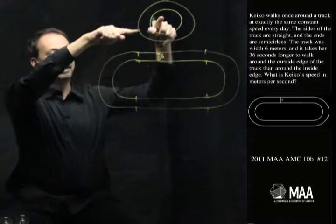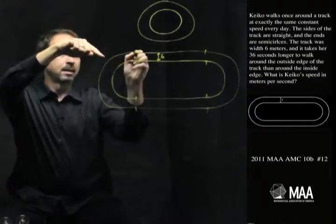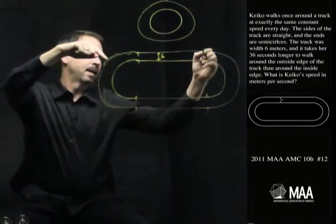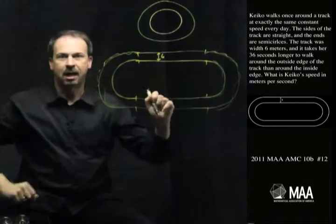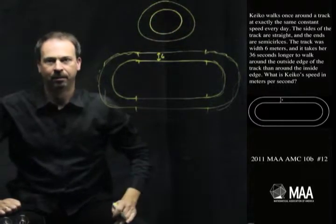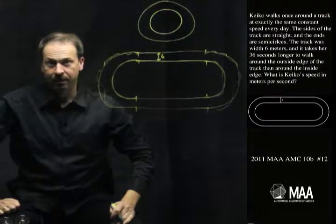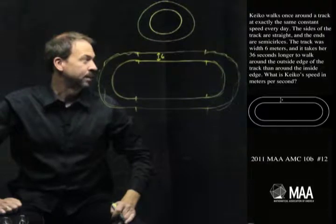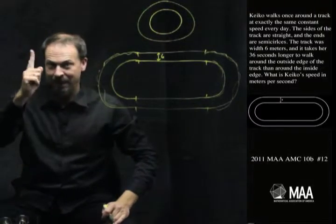So really, the difference in distance comes from walking this outer part compared to the inner part. Now I know it takes 36 seconds longer to do the outer circle than the inner one. So I've got a time and I'm being asked about, what is Keiko's speed?